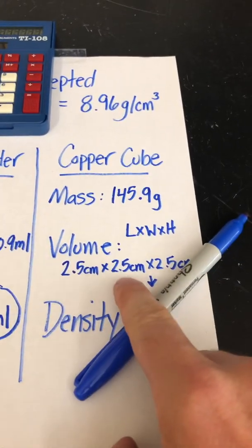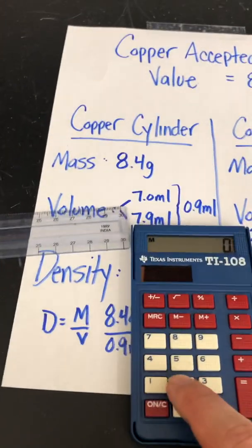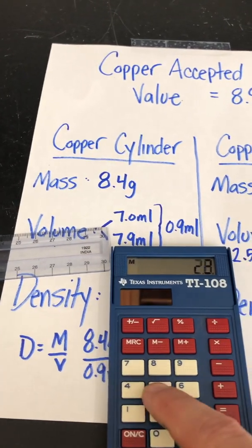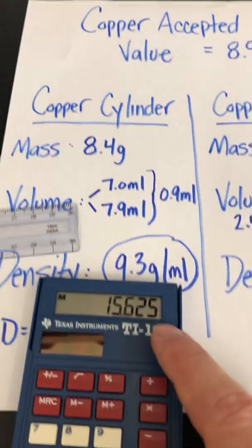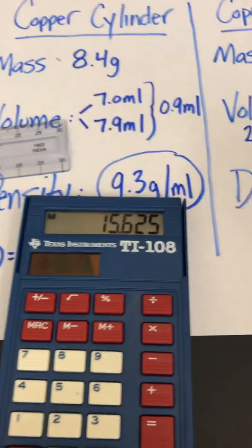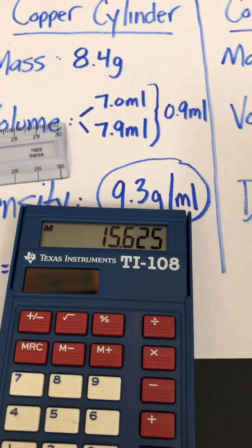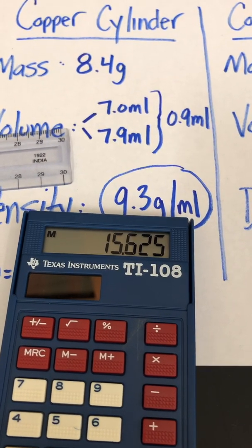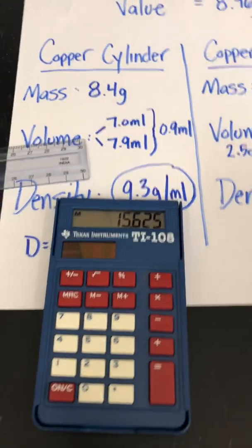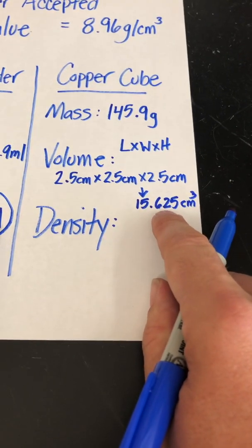Put that in the calculator. Should turn out to be 15.625. Now I'm going to keep it that number because that's not my final answer. My density will be my final answer. I'm going to keep that exactly as is, 15.625 cubic centimeters. I don't want to round right now because if I round that number, I may round myself out of my proper answer.